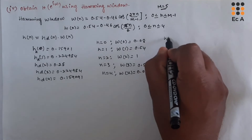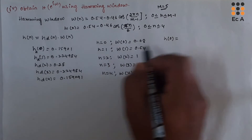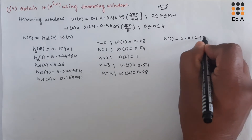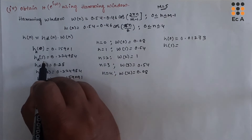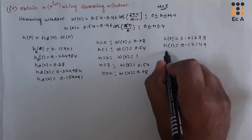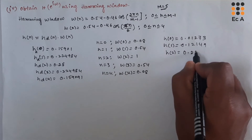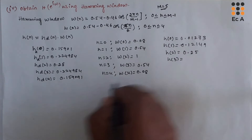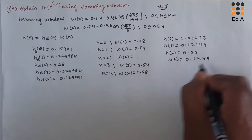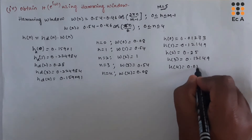Now let us find H of n. H(0) equals HD(0) times ω(0), which gives 0.01273. H(1) equals HD(1) times ω(1), which gives 0.12149. H(2) equals HD(2) times ω(2), which equals 0.25. H(3) equals HD(3) times ω(3), giving 0.12149. H(4) equals HD(4) times ω(4), giving 0.01273.